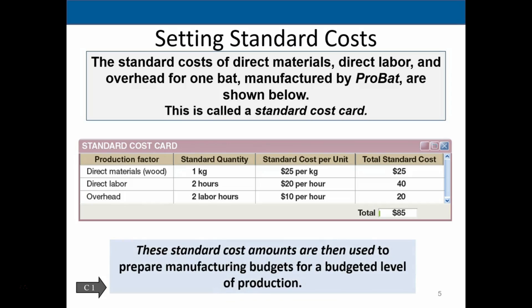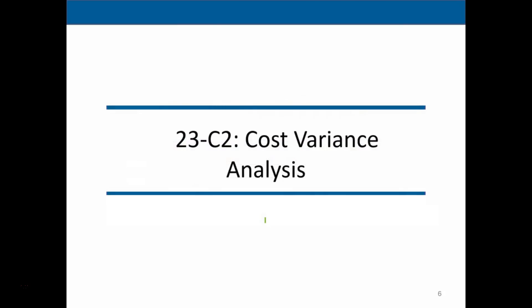These standard cost amounts are then used to prepare the manufacturing budget for the budgeted level of production. Now that we have the standard costs, if the production level changes, we can vary the costs to change with the production level.